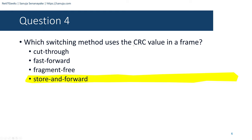Question number sixteen: Refer to the graphic — what type of cabling is shown? Options are STP, UTP, fiber, or coax. If you look at the terminating end and the typical yellow color of the cable, this is a fiber cable. The answer is fiber.